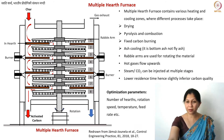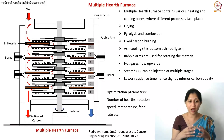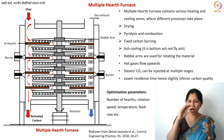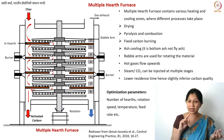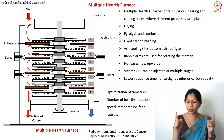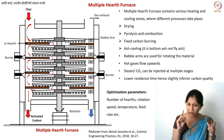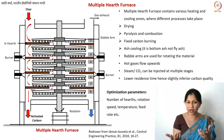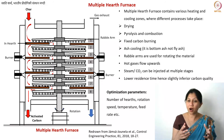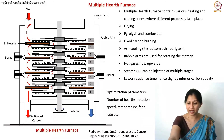The optimization parameters for the multiple hearth furnace are: the number of hearths — how many stages do you want, what type of operations you perform, how you gradually increase the temperature; the speed of the rabble arm rotation, which decides residence time; the temperature at various stages; and the feed rate in and out. All of these are your optimization parameters.